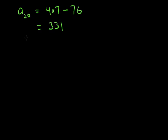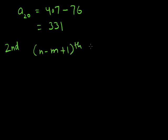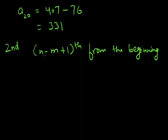This is the 20th term from the end obtained using the standard nth term formula applied to the reversed series. Another way to solve this is to find the (n - m + 1)th term from the beginning, where m = 20 is given. But first we need to find n, the total number of terms.